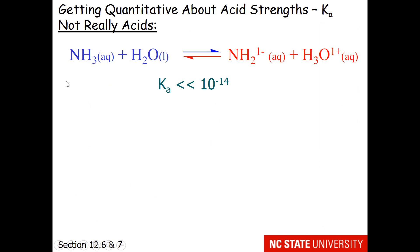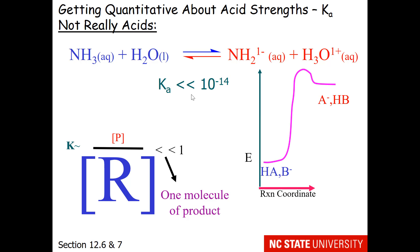And finally, there are some things on our acid base table that aren't really acids. Ammonia reacting with water to make hydronium has a very tiny Ka. It's not going to make very much product at all. So this is an extremely non-extensive reaction. And honestly, we wouldn't say that the reaction occurs. Ammonia is not a very good acid.